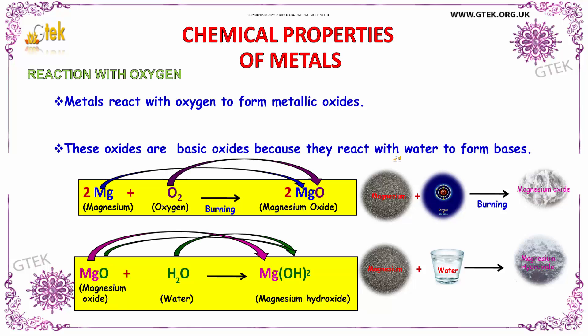Let us discuss about some of the chemical properties of metals. First, we will see about the reaction with oxygen. Here we have taken the metal magnesium. When a metal reacts with oxygen, it will form some oxides — that is nothing but the metallic oxide. Magnesium on reaction with oxygen, in the presence of burning, yields magnesium oxide.